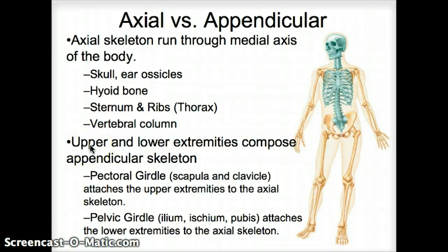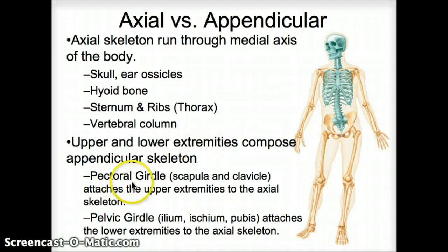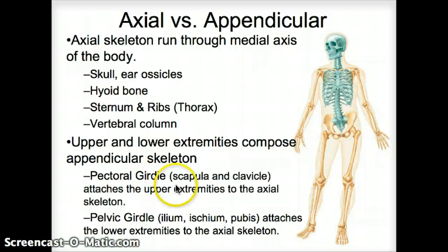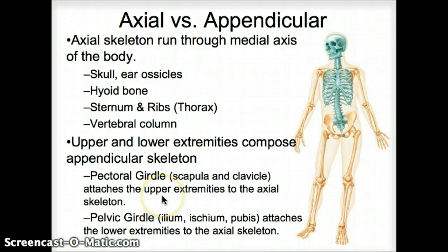Everything attached to these axial pieces are the appendages, and they make up the appendicular skeleton — the upper and lower extremities. The upper extremity includes the pectoral girdle. If you go to the gym, you have those buff guys who work out all these muscles in the front — the pectoral area. So the pectoral girdle refers to the shoulder, including the scapula as well as the clavicle. The scapula is the shoulder blade and the clavicle is the collarbone. They attach the upper extremities to the axial skeleton.